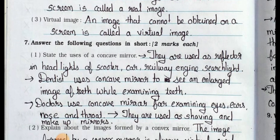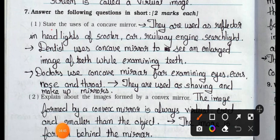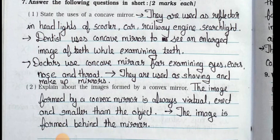Now see main 7. Answer the following questions in short, two marks each. Question 1: State the uses of concave mirror. Answer: They are used as reflectors in headlights of scooters, cars, railway engines and searchlights. Dentists use a concave mirror to see an enlarged image of teeth while examining. Doctors use concave mirrors for examining eyes, ears, nose and throat. They are also used as shaving and makeup mirrors.